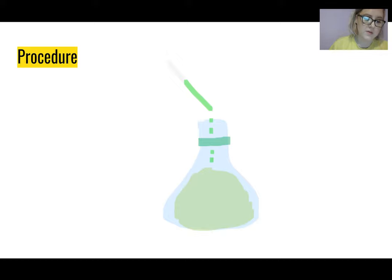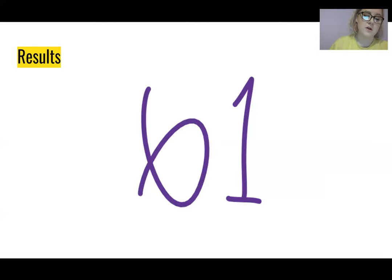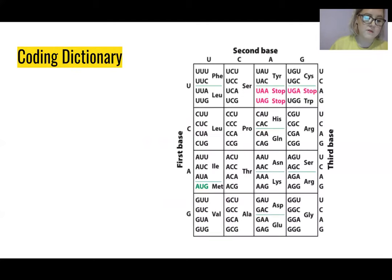Many other codons were determined using this method. This method identified 61 codons. The coding dictionary codes for 64 possible codon triplets and 20 amino acids. The mRNA strands read from 5 prime to 3 prime and there are specific start and stop codons.